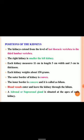The kidneys extend from the level of the last thoracic vertebra to the third lumbar vertebra. The right kidney is smaller than the left kidney. Each kidney measures 11 cm in length, 5 cm in width and 3 cm in thickness, and weighs about 150 grams. The outer border of the kidney is convex and the inner border is concave, called the hilum, through which blood vessels enter and leave. The adrenal gland is situated at the apex of the kidney.